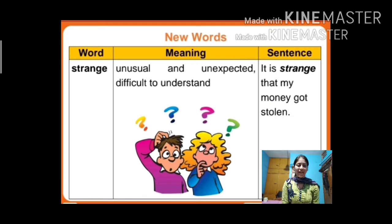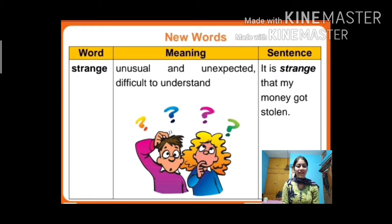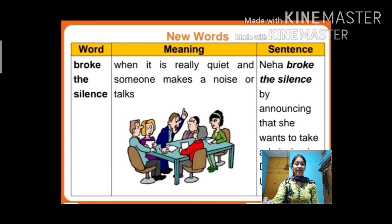The next word is 'strange.' Strange means unusual, unexpected, or difficult to understand. A sentence can be: It is strange that my money got stolen. The next word is 'broke the silence.' Its meaning is when it is really quiet and someone makes a noise or talks.